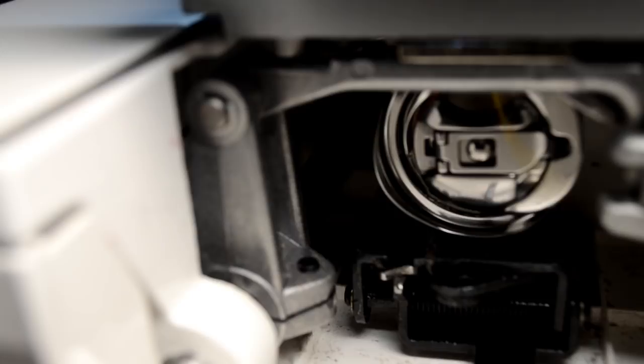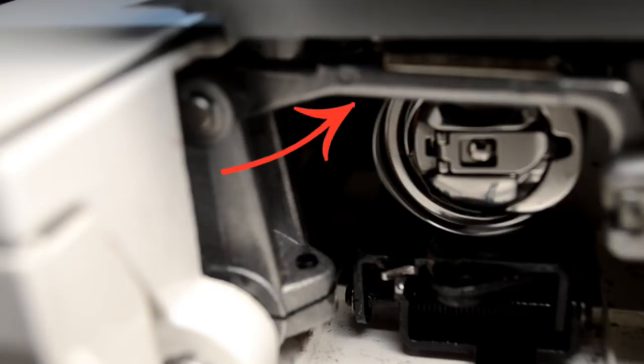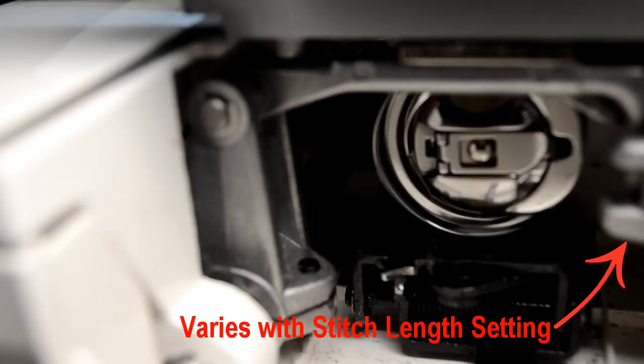Now let's watch it in motion. Now the bar that you're seeing up above the bobbin is actually the feed dogs moving. Right now I have them in the up position. And that's what happens when your feed dogs are up and you're stitching.